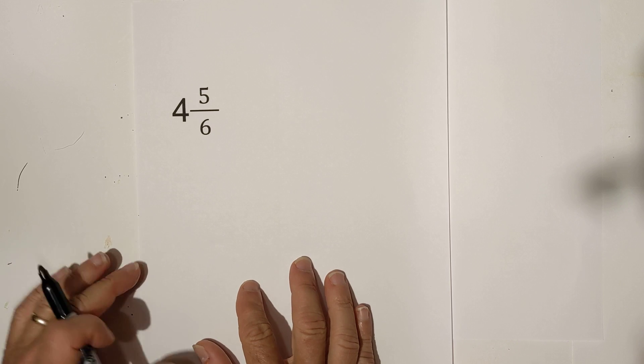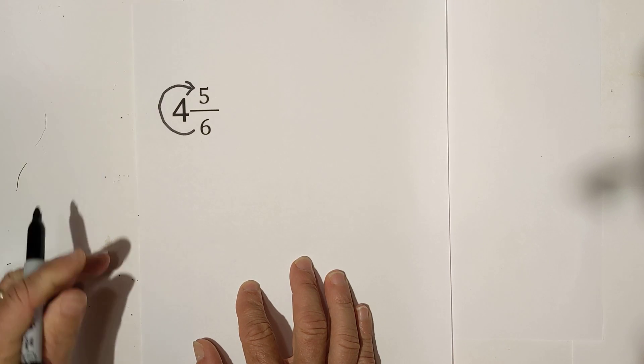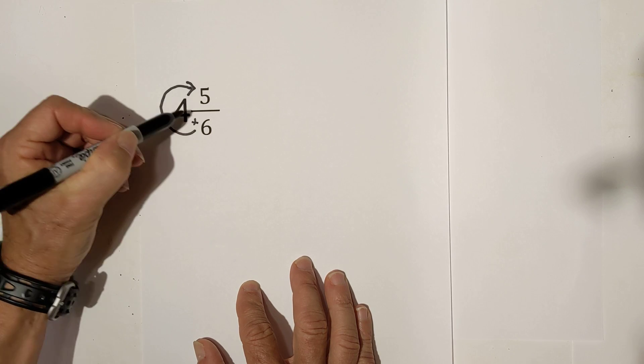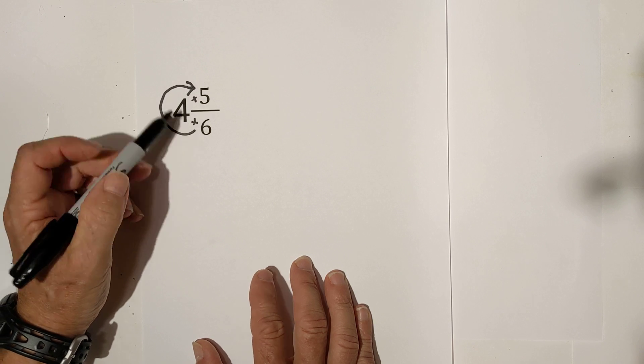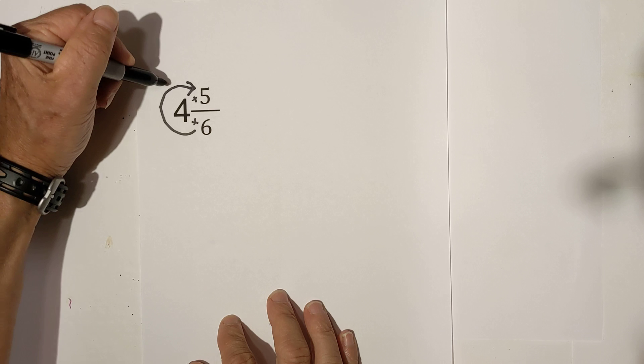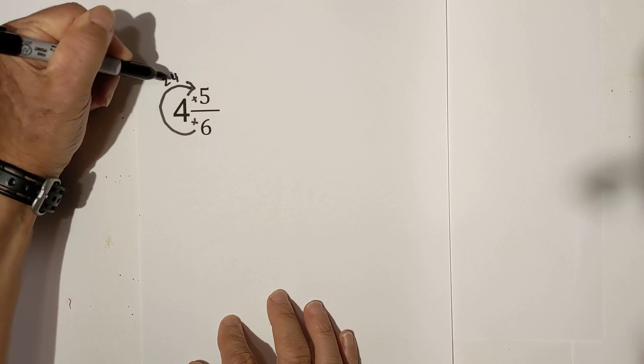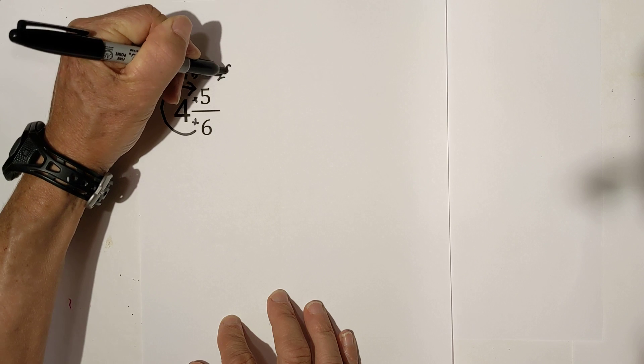Here's our other example again. I'm going to go around the house. Remember I multiply then I add. 6 times 4 is 24 plus 5 equals 29.